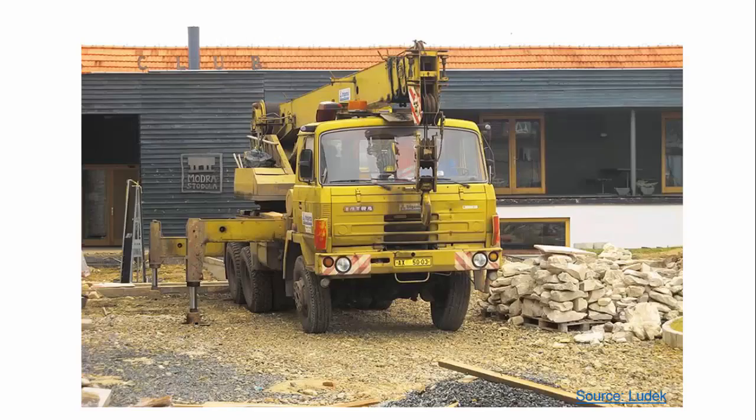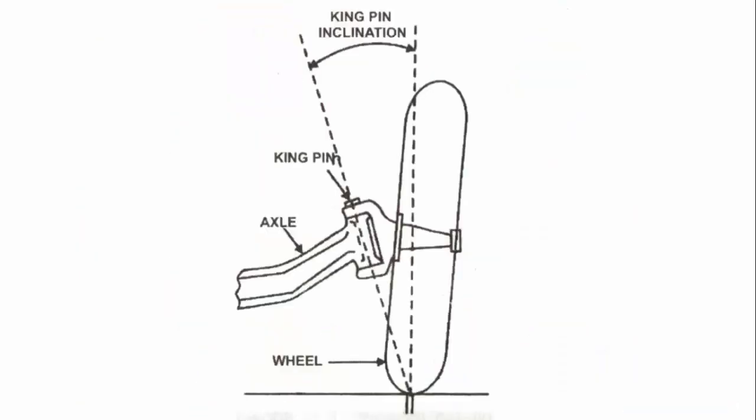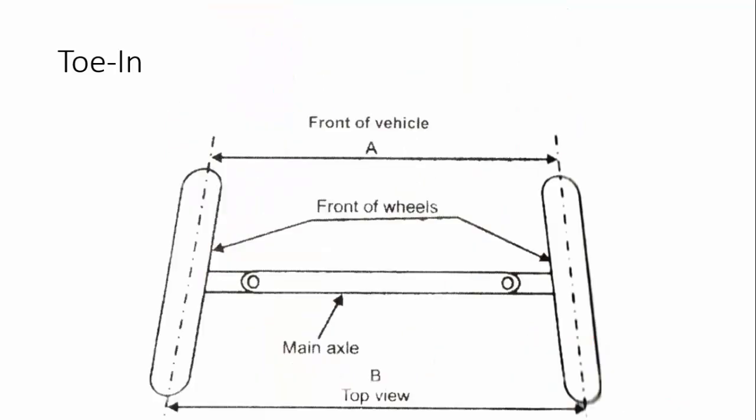So we have seen four different angles: caster angle, camber angle, kingpin inclination, and toe-in and toe-out on turns. These are the angles which are checked and adjusted during wheel alignment. I hope this video helped you understand these concepts. If you have any clarification, please post it in the comments. Thank you.